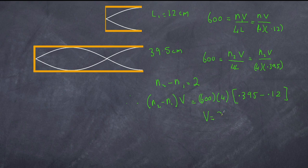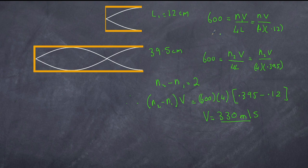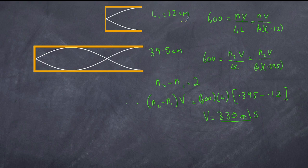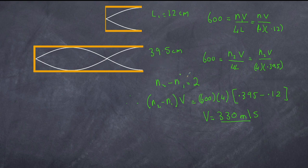Calculating that out gives v = 330 meters per second — a very good result. The accepted velocity of sound is around 340 m/s at roughly 20°C. By using the difference between two successive resonance lengths, we remove the end effect entirely. If we calculate using each length individually with n = 1 or n = 3, we get slightly lower values, but adding the end correction brings them closer to the accepted value — which you can try yourself.